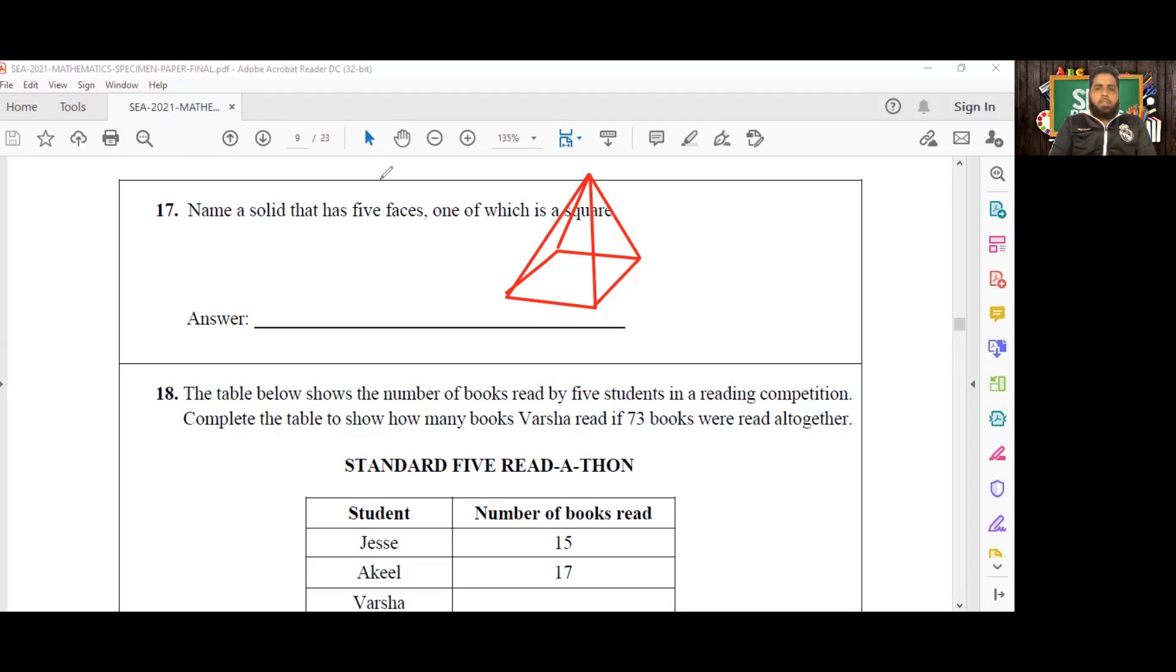And we can easily count the number of faces. We have the one here underneath, and we have two which is this one here on the side. We have three there in the back. We have four on the side opposite to two, and then we have a fifth face here at the front opposite to the face that's labeled three here. Okay, so this is a solid that has five faces one of which is a square and the answer is a square based pyramid.